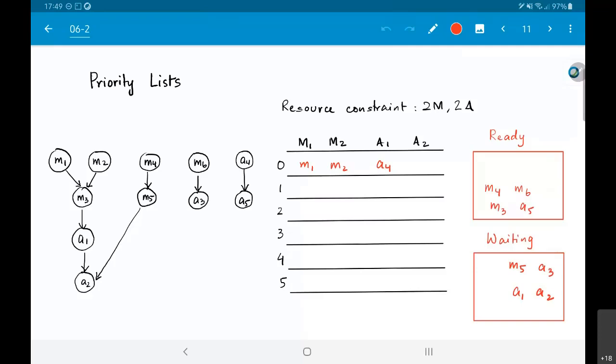I straight away go ahead and put M1 and M2 on step 0. It seems fairly obvious that if I somehow differ M1 and M2 and do M4 and M6 instead in the first step, then my critical path is going to get affected. I am going to take longer than I would otherwise take. So that intuitively is easy to justify.